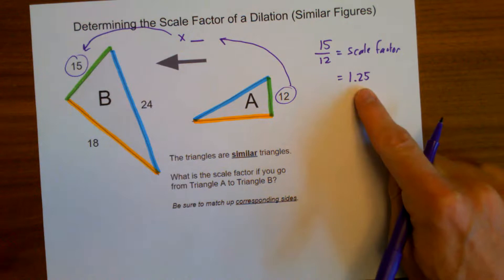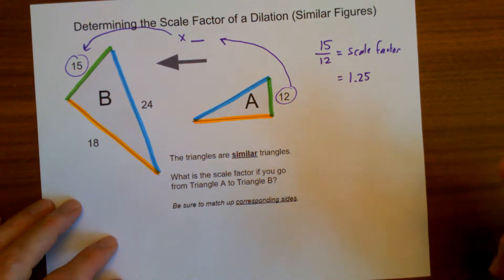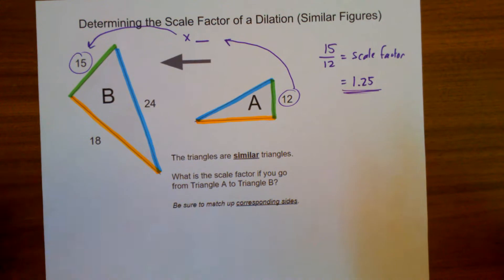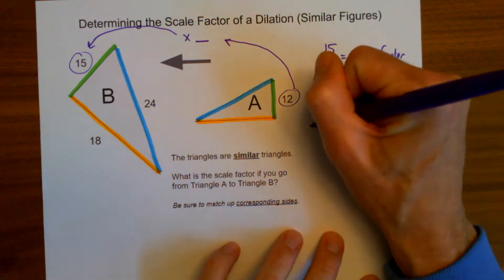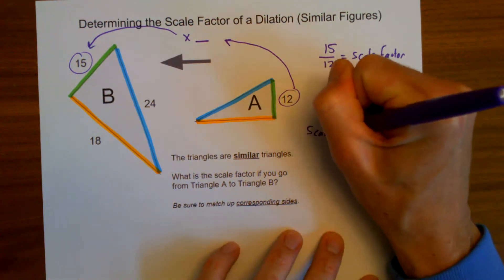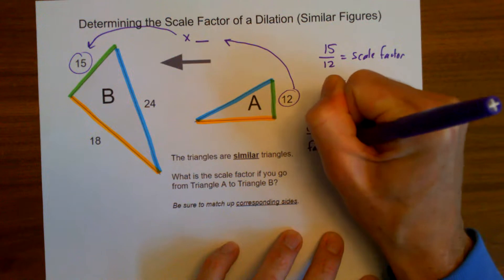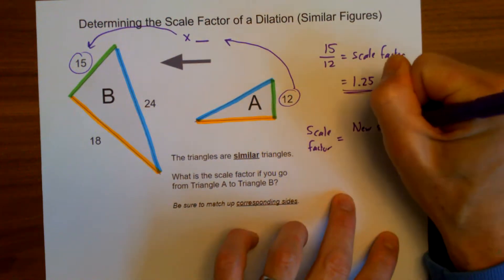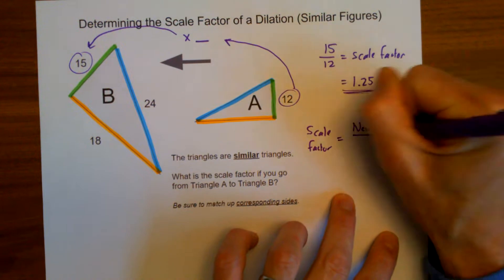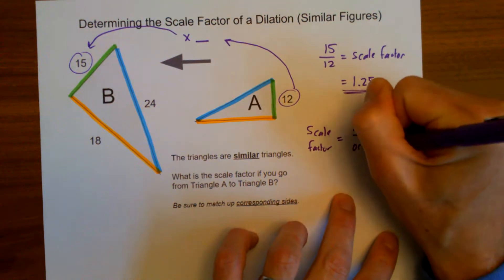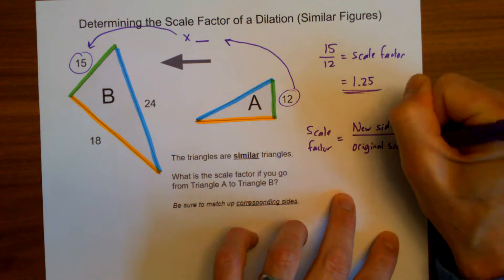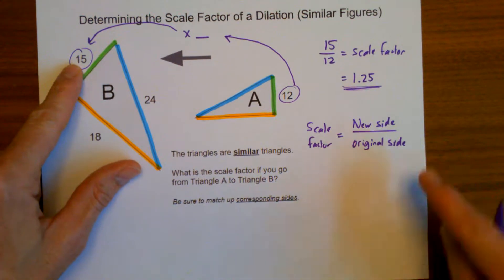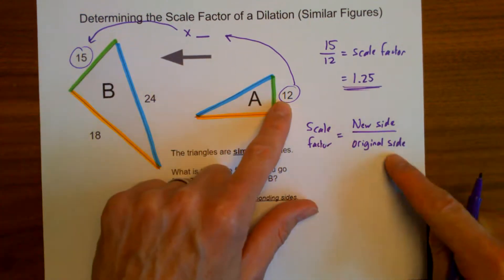The answer of 1.25 is larger than one, which makes sense because the shape is growing. So there is my scale factor for that particular dilation. Another way to think about this: whenever you calculate scale factor, you can think of it as new side divided by original side — the new side length of 15 divided by the original side length of 12.